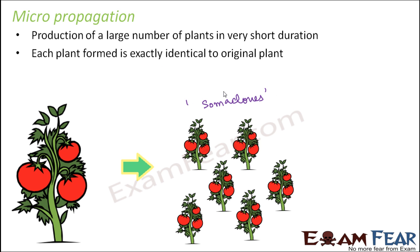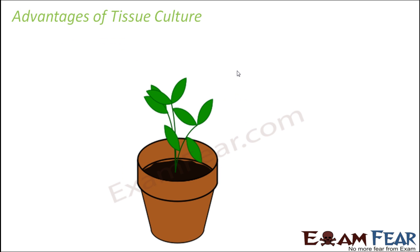Each plant formed is exactly identical to the original plant. With this concept of tissue culture or micropropagation, commercially a large number of plants have been formed — for example tomato and apple — they are all grown like this so that they can be grown on a commercial scale, meaning a huge number of plants are formed within a very short period of time.